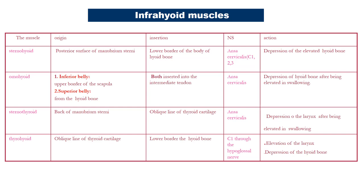Infrahyoid muscles: sternohyoid, omohyoid, sternothyroid, and thyrohyoid. The sternohyoid muscle takes origin from the posterior surface of the manubrium sterni and is inserted into the lower border of the body of the hyoid bone. Nerve supply from ansa cervicalis. Action: depression of the elevated hyoid bone.